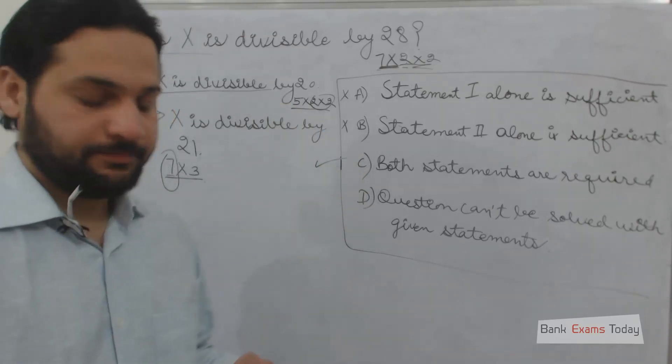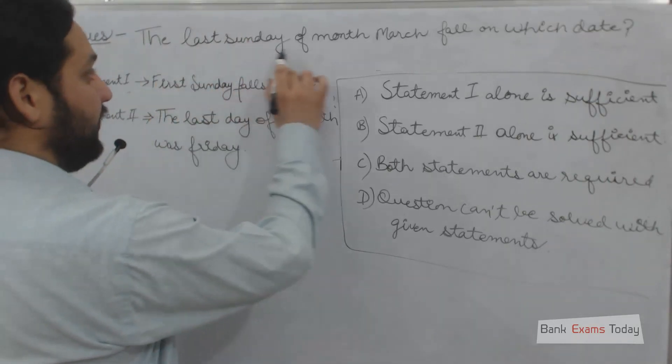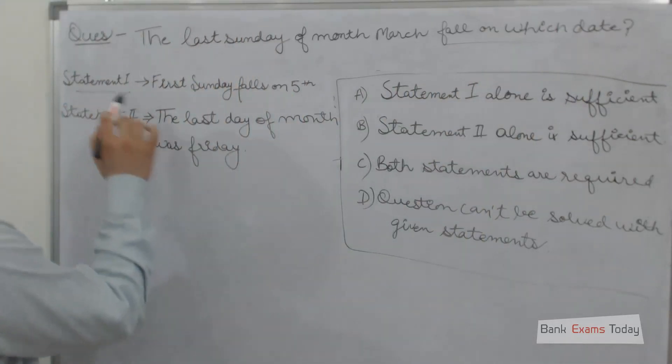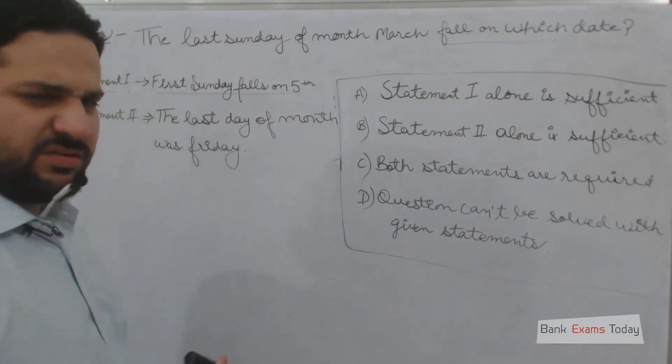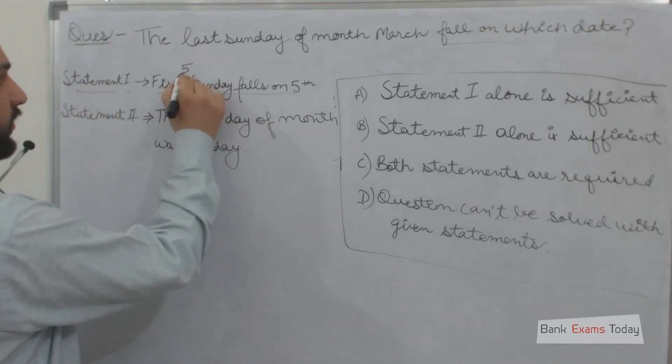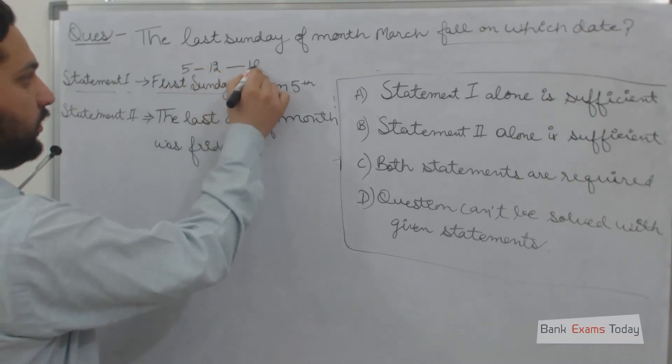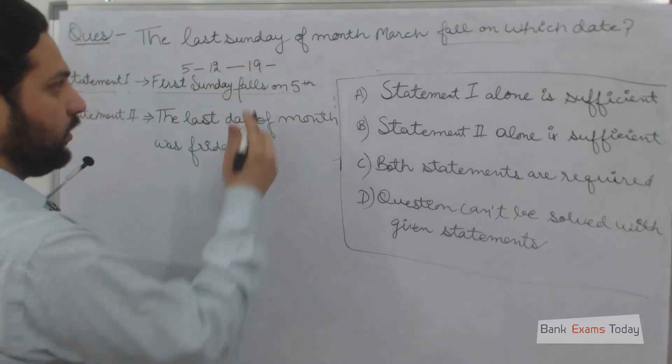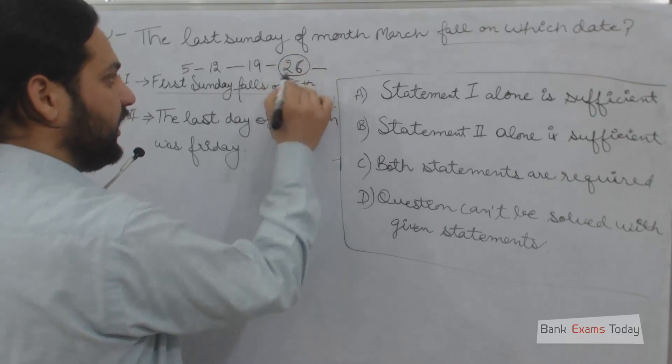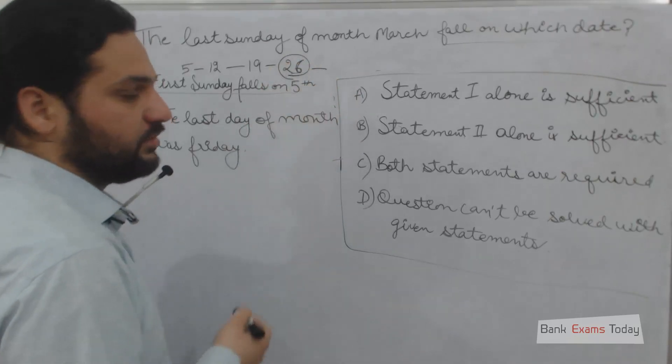Let's take an important example: The last Sunday of March falls on which date? Statement 1: First Sunday falls on 5th. From this we can calculate: first Sunday is on 5th, second on 12th, third on 19th, fourth on 26th, then next month. The last Sunday falls on 26th March. We can answer the question by statement 1 alone.